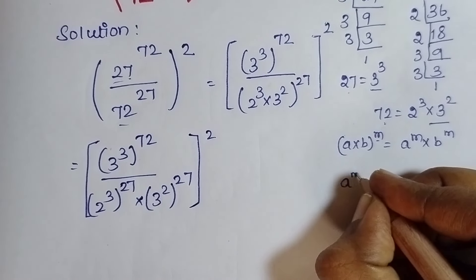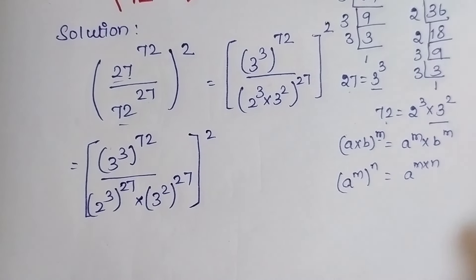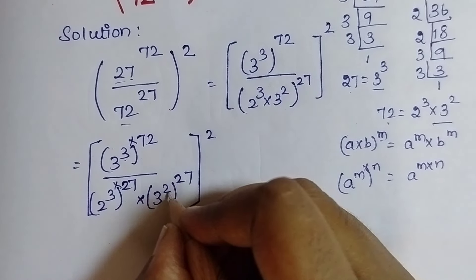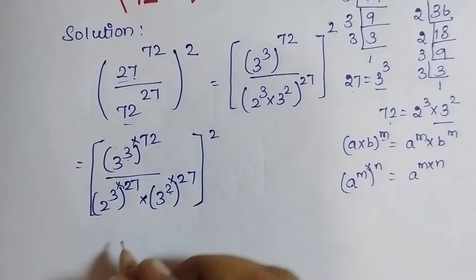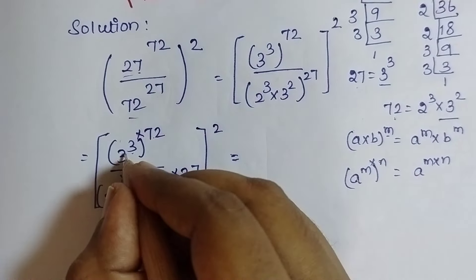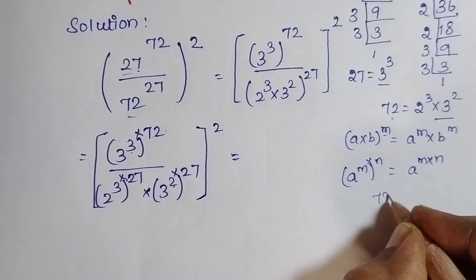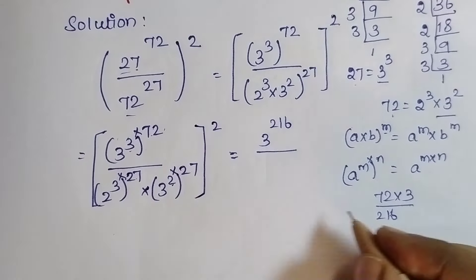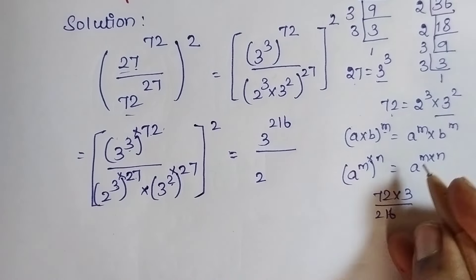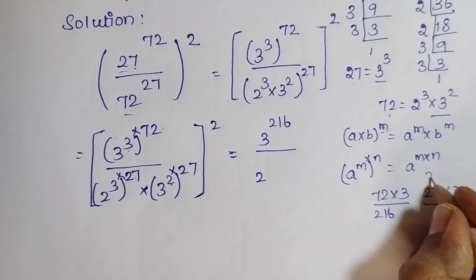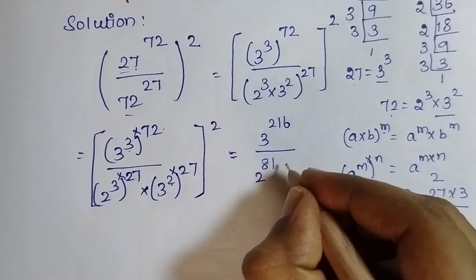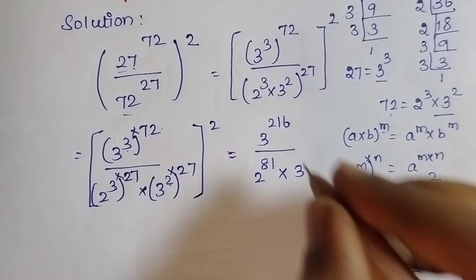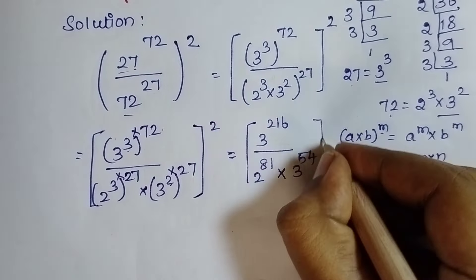We know another rule: A power M, the whole power N, can be written as A power M times N — we can multiply the two powers. Applying this: the numerator becomes 3 to the power of 3 times 72, which is 3 to the power of 216. The denominator gives 2 to the power of 27 times 3, which is 2 to the power of 81, and 3 to the power of 27 times 2, which is 3 to the power of 54. So we have 3 power 216 divided by 2 power 81 times 3 power 54, the whole squared.